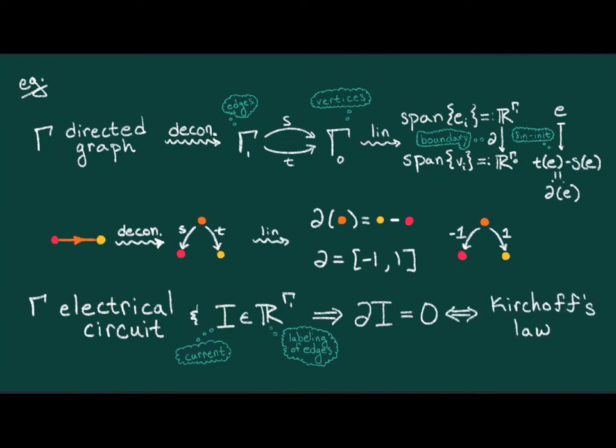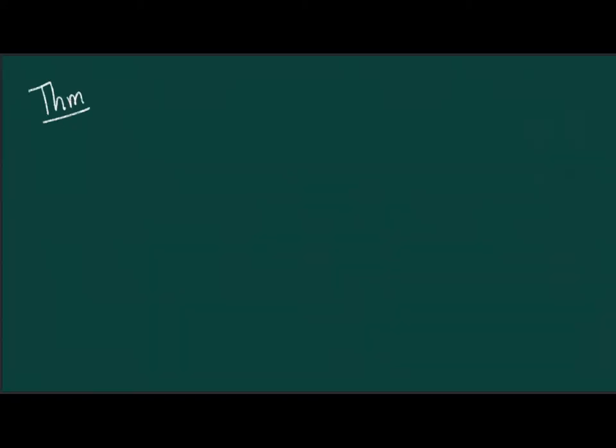But the real kicker, and one of the most useful applications along these lines, are to the study of the topology of this graph. For example, the number of connected components is equal to the dimension of the kernel of the transpose of the boundary map.